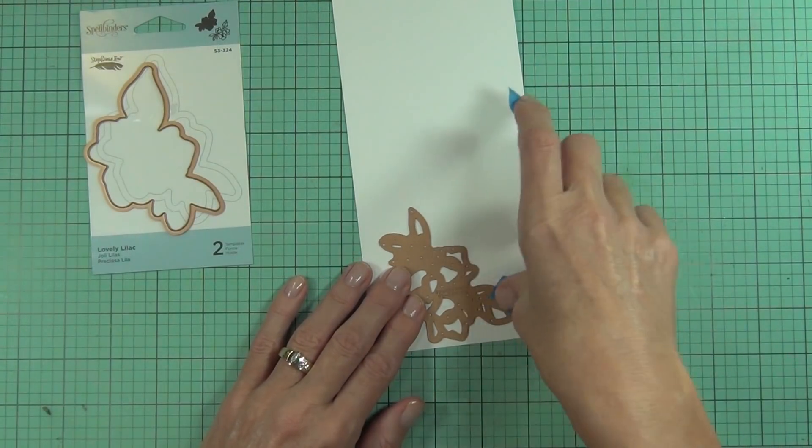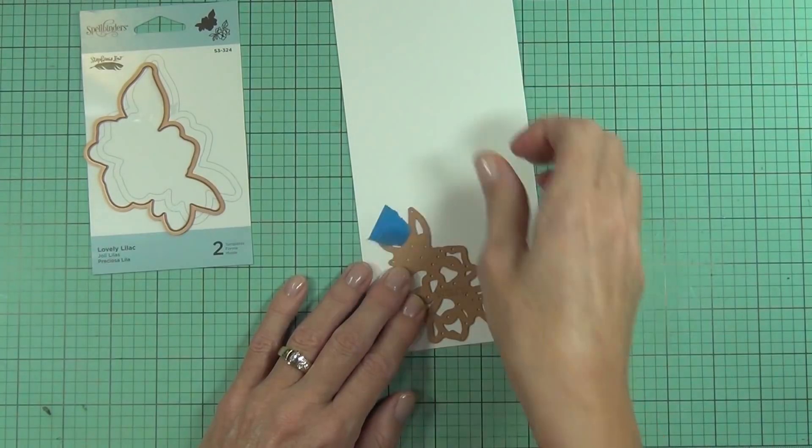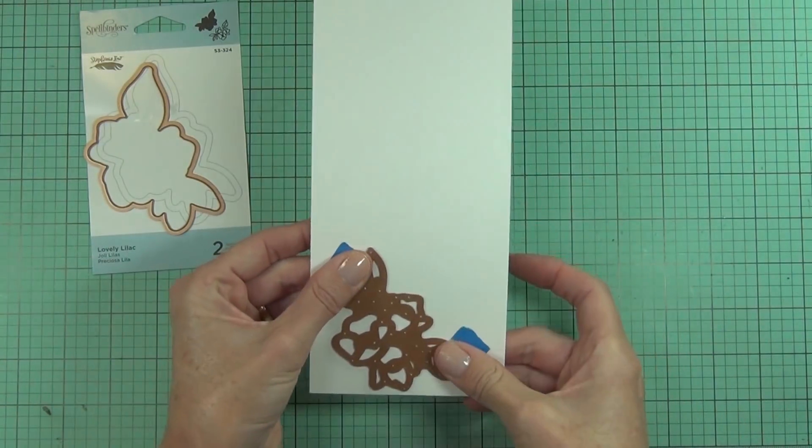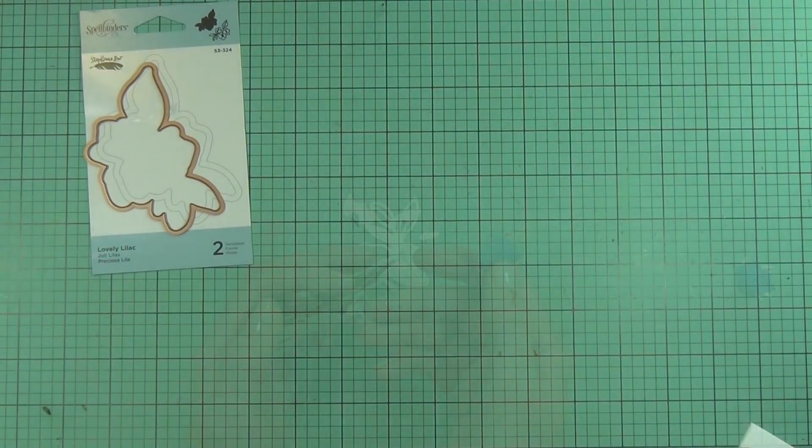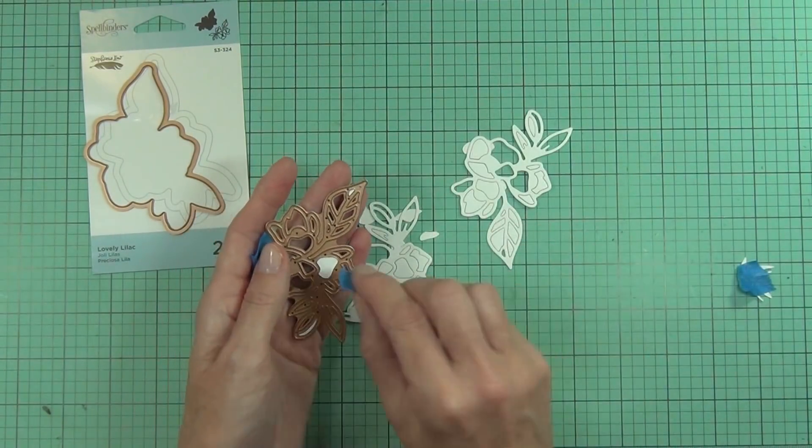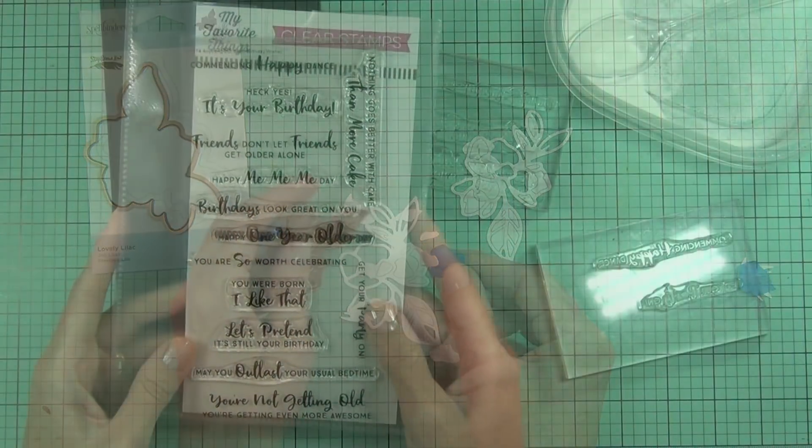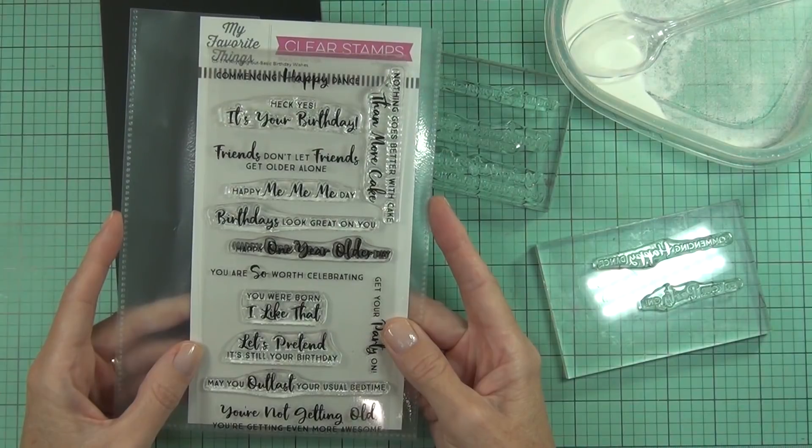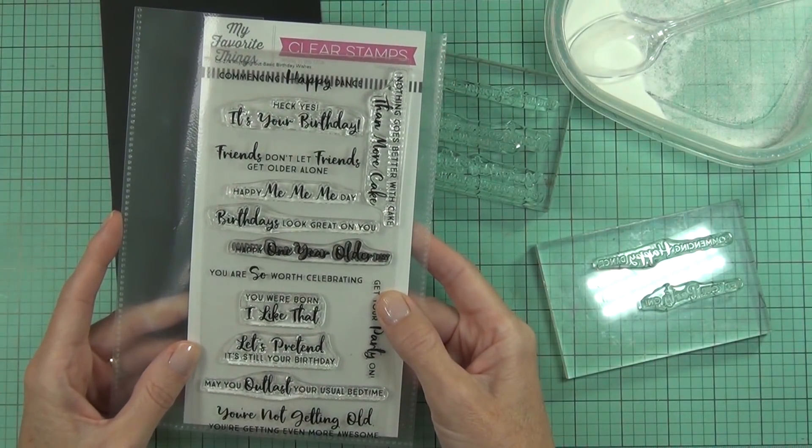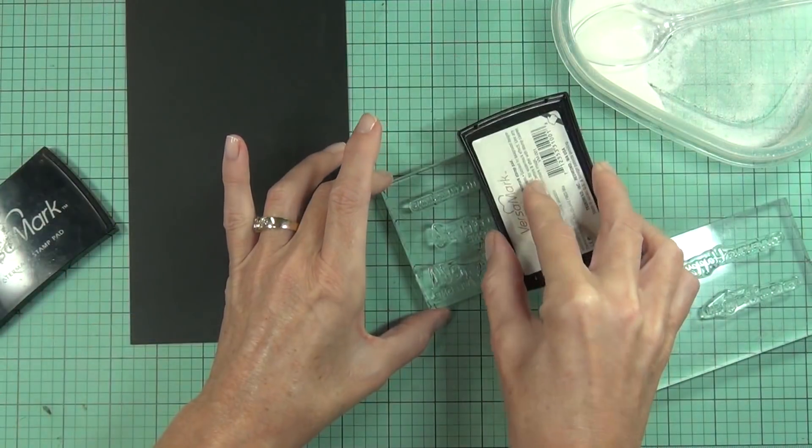Next, I'm going to die cut a couple of the outline images of the lilac flower. I'm just doing this in some of the 80-pound Neenah cardstock. These are both stocked at Scrapbook Boutique now, which is fantastic. It's been really difficult to get this cardstock in Australia, and I'm really liking it. It's a lovely bright white paper and easy to use.